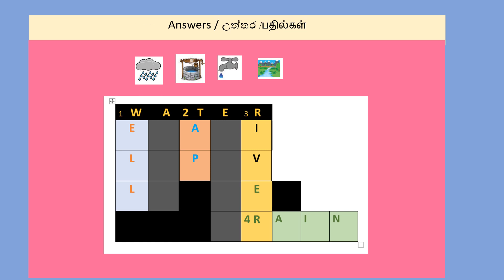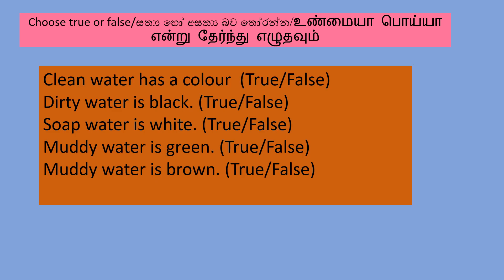Answers. Number 1: Water. Number 2: Well. Number 3: Tap. Number 4: River. Number 5: Rain. Choose True or False. Clean water has a color.